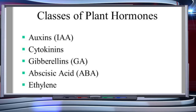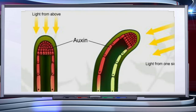This slide shows the different classes of plant hormones. The first is auxins, that is indole-3-acetic acid or IAA. The second is cytokinins. The third is gibberellins, or gibberellic acid. The fourth is abscisic acid, or ABA. And the fifth is ethylene.